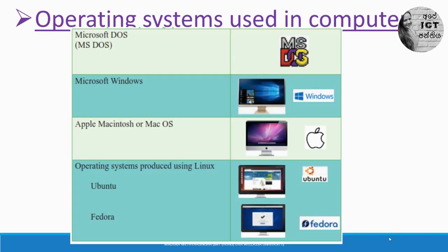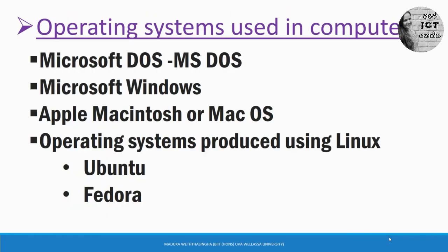There are many operating systems used worldwide; here we will learn about a few. Operating systems used in computers include: Microsoft DOS (MS-DOS), Microsoft Windows, Apple Macintosh or Mac OS, and operating systems produced using Linux — such as Ubuntu and Fedora. You have to remember the icons related to each and every operating system.